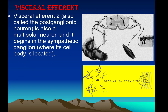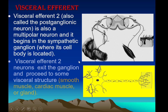Visceral efferent neuron 2, also called the post-ganglionic neuron, is a multipolar neuron that begins in the sympathetic ganglia, where its cell body is located. The cell bodies of these post-ganglionic neurons are located in these ganglia. They exit the ganglia and proceed to visceral structures such as smooth muscle, cardiac muscle, or glands, innervating them.